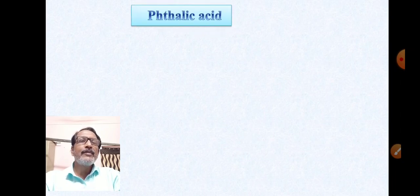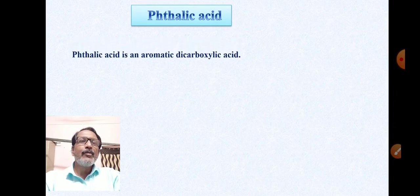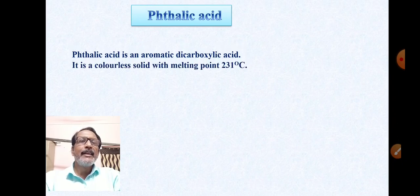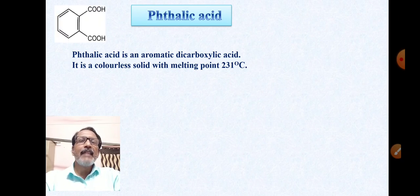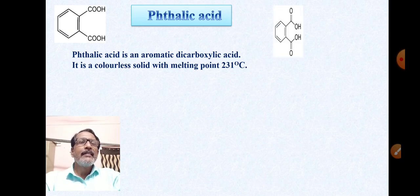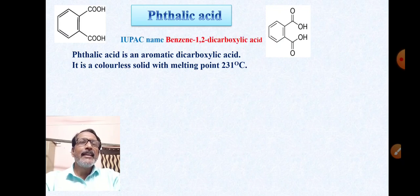Phthalic acid is an aromatic dicarboxylic acid. It is a colorless solid with a melting point of 231 degrees Celsius. Phthalic acid is an organic compound in which two COOH groups are directly attached to a benzene ring at the ortho position. The IUPAC name of phthalic acid is benzene-1,2-dicarboxylic acid.